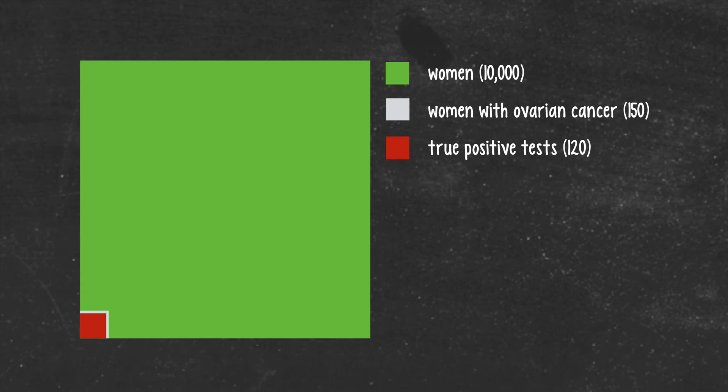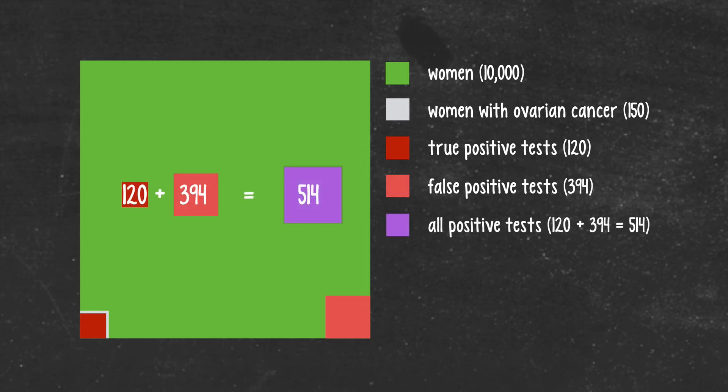Remember, these are the true positive results because in each case the woman being tested actually does have the disease and so the test is correct in its prediction. If on the other hand we consider the remaining population of women who do not have the disease, we would expect about 394 of them to test positive in spite of this, corresponding to the test's 4% rate of false positives. And so out of this total of 10,000 women, we would expect to get about 514 positive test results in total, which is the sum of all the true and false positive tests.